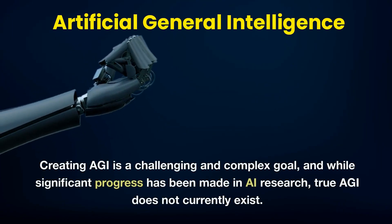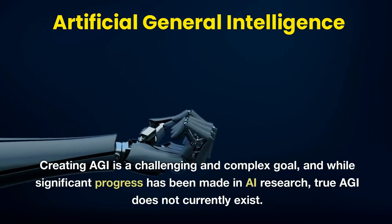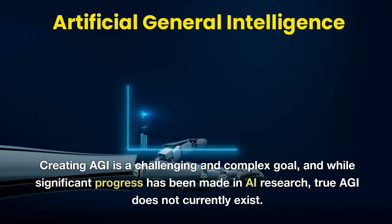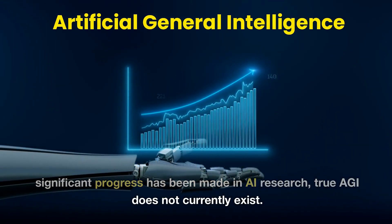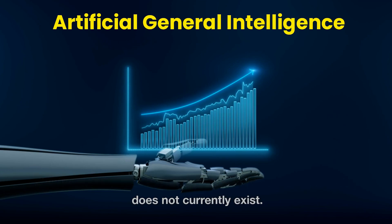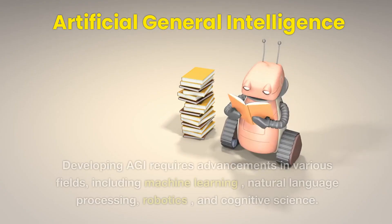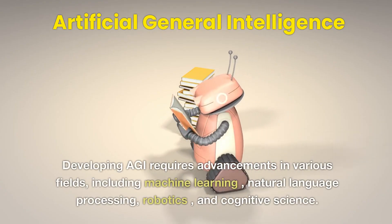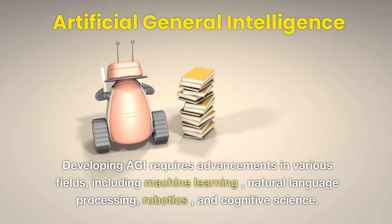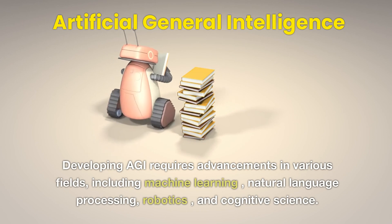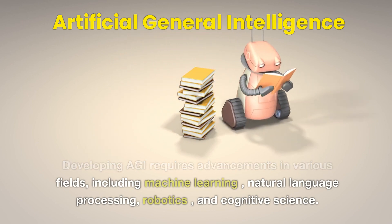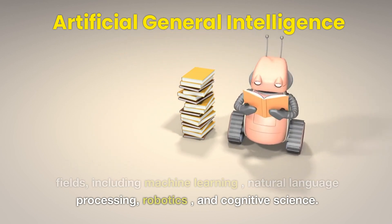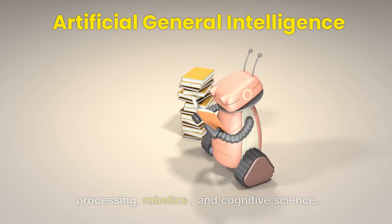Creating AGI is a challenging and complex goal, and while significant progress has been made in AI research, true AGI does not currently exist. Developing AGI requires advancements in various fields, including machine learning, natural language processing, robotics, and cognitive science.